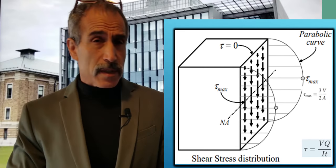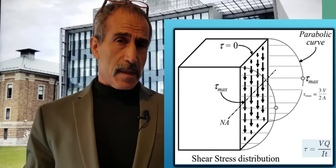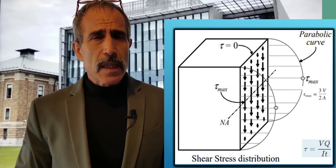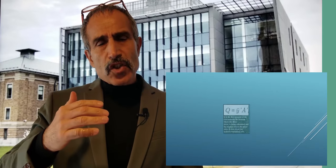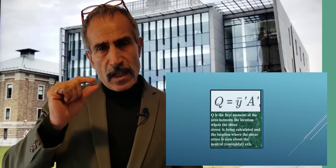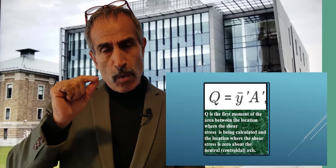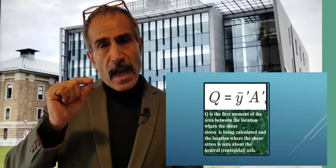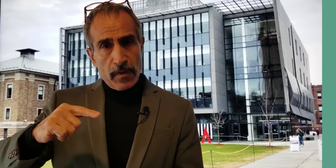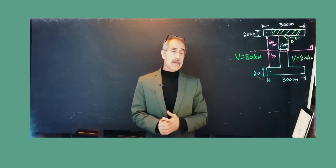When we look at the shear stress distribution, the shear stress at the top and bottom is zero, but at the neutral axis in the middle it is maximum. So what is Q? Q is the first moment of the area between the location where we want to calculate the shear and where the shear is zero — either below it or above it. We have an example here to explain in more detail what Q is.